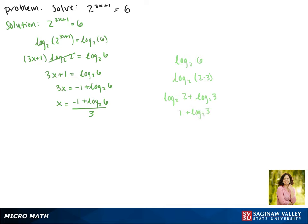Plugging that back into our equation gives us x equals negative 1 plus 1 plus the log base 2 of 3 all divided by 3. Negative 1 plus 1 is 0, so our final answer is the log base 2 of 3 divided by 3.